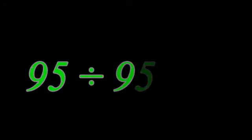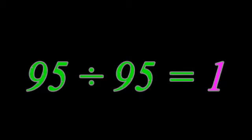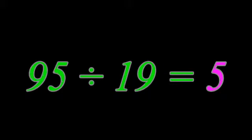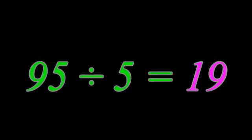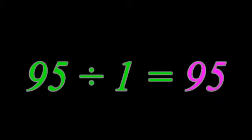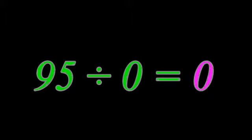95 divided by 95 equals 1. 95 divided by 19 equals 5. 95 divided by 5 equals 19. 95 divided by 1 equals 95. 95 divided by 0 equals 0.